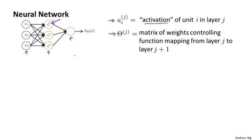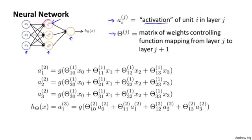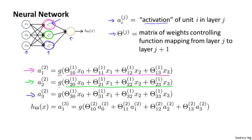So here are the computations that are represented by this diagram. This first hidden unit here has its value computed as follows. A21 is equal to the sigmoid function, or the sigmoid activation function, also called the logistic activation function, applied to this sort of linear combination of its inputs. And then this second hidden unit has this activation value computed as sigmoid of this. And similarly, for this third hidden unit is computed by that formula.